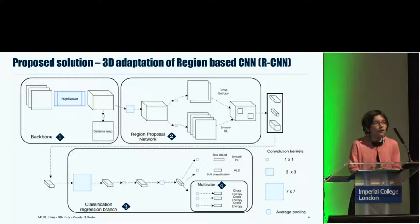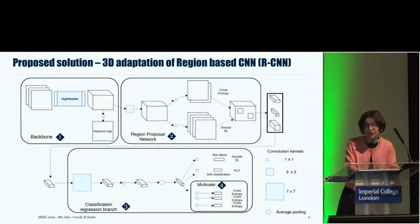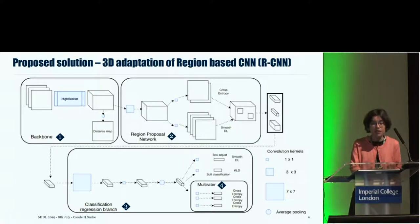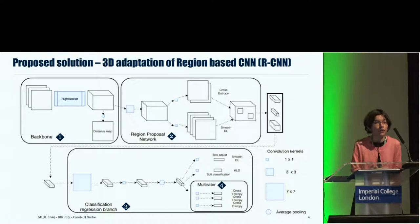To tackle detection and characterization of EPVS and lacunes, we adapted a region-based CNN in 3D. RCNN requires a backbone for feature extraction, a region proposal step, and then final classification and refinement of detected regions. Additionally, since we had multiple raters viewing our images, we introduced a multi-rater step to better understand each rater's behavior.